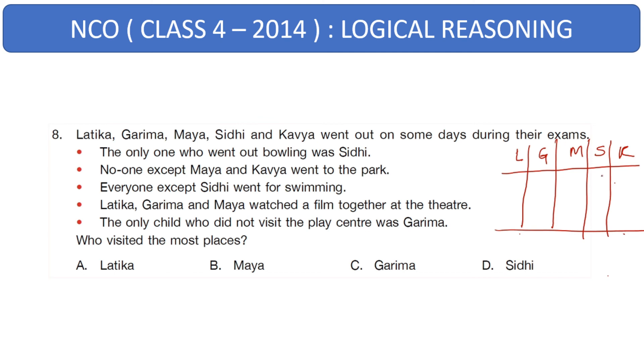For the first one it says, the only one who went out bowling was Siddhi. So Siddhi went out bowling. Next one says, no one except Maya and Kavya went to the park. So Maya and Kavya were the ones who went out. Everyone except Siddhi went swimming. So leaving Siddhi, we will put ticks for everyone else. Latika, Garima and Maya watched a film together at the theater. So Latika, Garima, Maya went for the movie. And the only child who did not visit the play center was Garima. So except Garima, we will put ticks for everyone else. The one who visited most places is the one with the most ticks. That is Maya with four ticks. Your right answer is option B, Maya.